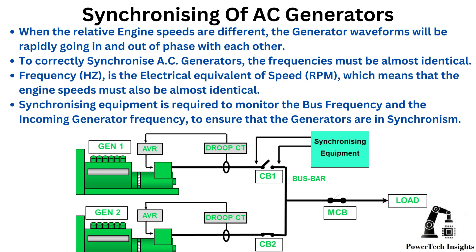When the relative engine speeds are different, the generator waveforms will be rapidly going in and out of phase with each other. To correctly synchronize AC generators, the frequencies must be almost identical. Frequency is the electrical equivalent of speed, which means that the engine speeds must also be almost identical. Synchronizing equipment is required to monitor the bus frequency and the incoming generator frequency to ensure that the generators are in synchronization.